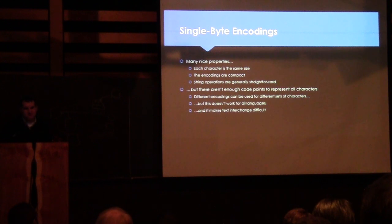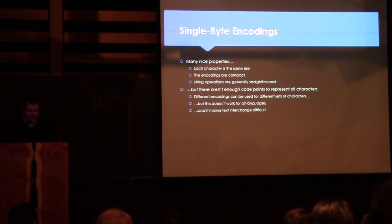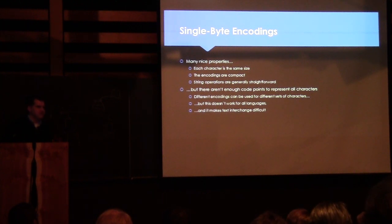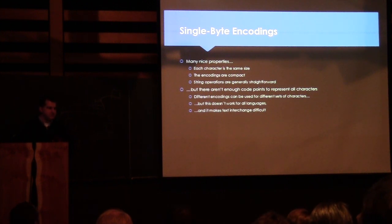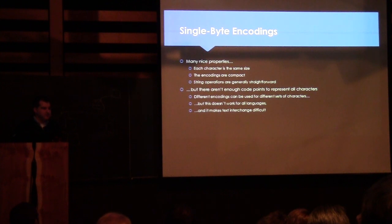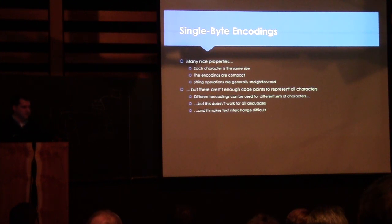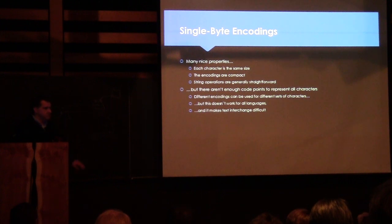Single-byte encodings have a lot of nice features: each character is the same size, text is very compact for languages with a small number of characters, and string operations are generally straightforward. Functions like to-upper or is-digit are simple to implement and understand. But there aren't enough code points to represent all characters — not just for all European languages, but some languages have more than 256 characters entirely. This makes text interchange difficult because of the different encodings, and we need another solution for languages with more characters than we can represent.